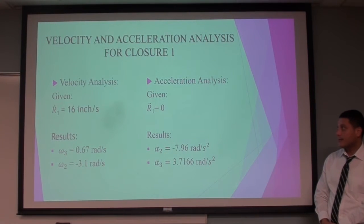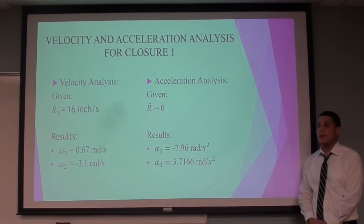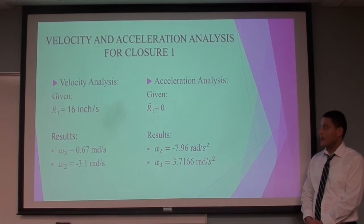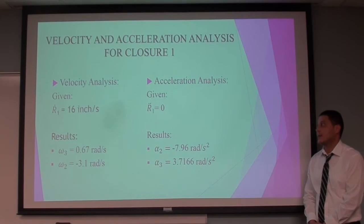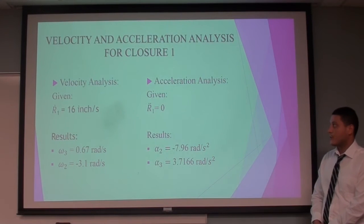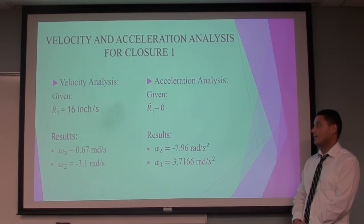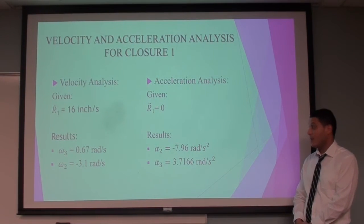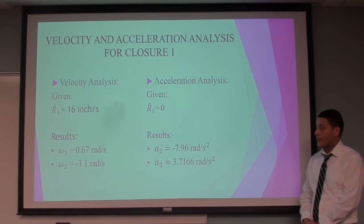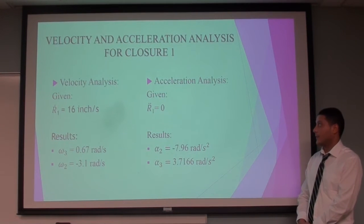Then, we moved on to velocity analysis. The linear velocity of the slider was given to be 16 inches per second. So, we took the first derivative of the position, and we determined the angular velocity of the crank and the coupler link.